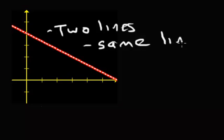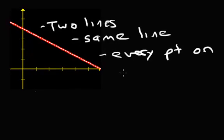Okay, because all of these have two lines. A same line, and what that means is every single point, so every point on the line is a solution.